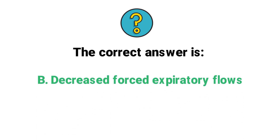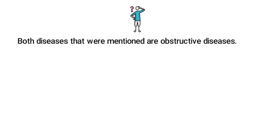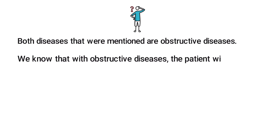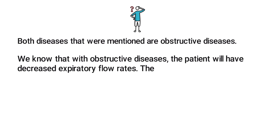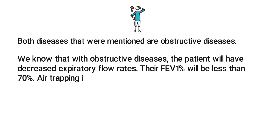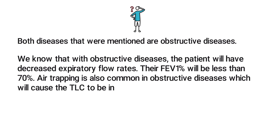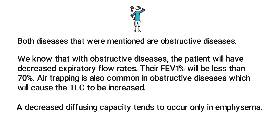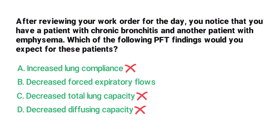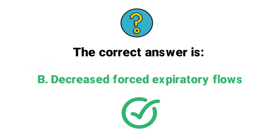The correct answer is B, decreased forced expiratory flows. Both chronic bronchitis and emphysema are obstructive diseases. With obstructive diseases, the patient will have decreased expiratory flow rates and an FEV1 percentage less than 70%. Air trapping is also common, which causes total lung capacity to be increased. Decreased diffusing capacity tends to occur only in emphysema. So the correct answer is B, decreased forced expiratory flows.